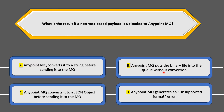Option B says AnyPoint MQ puts the binary file into the queue without conversion. Though this could technically be done, practically putting a binary file as-is into the queue can cause havoc for different applications processing the data, because non-text-based payloads contain many special characters that can badly impact servers or applications processing data on AnyPoint MQ queues. So Option B is never the preferred approach and we can discard it as well.